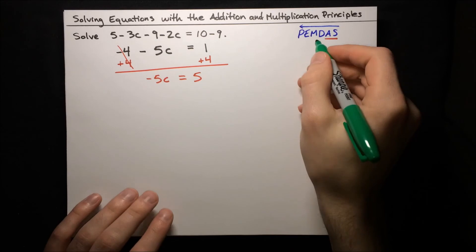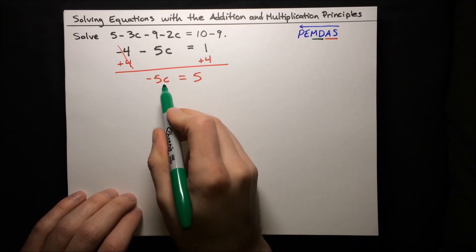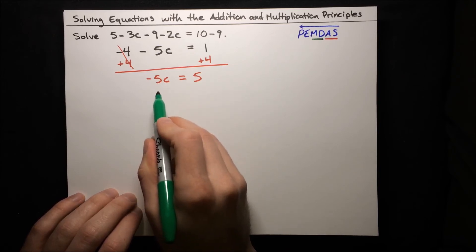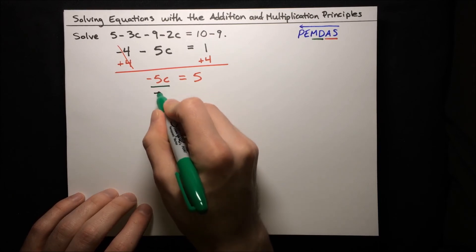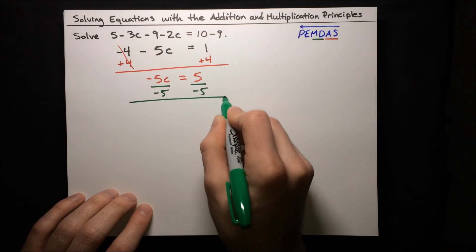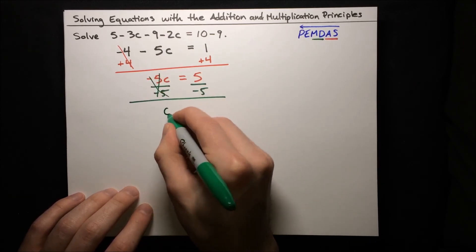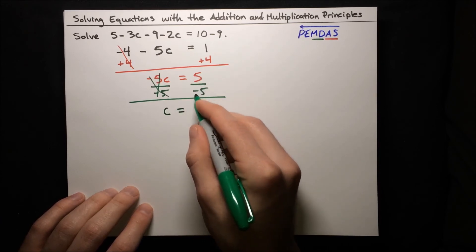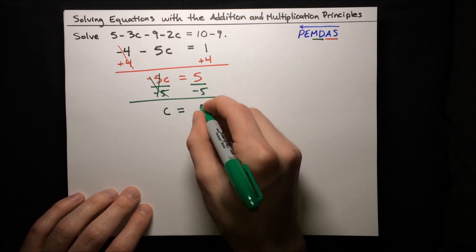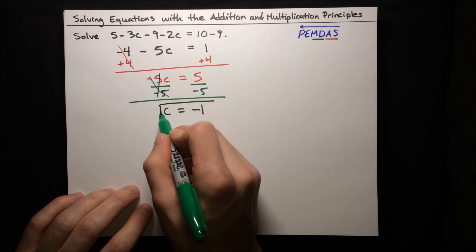Now we can use multiplication and division to get c alone. We've got a constant, negative 5, times c. To cancel it out, we divide both sides by negative 5. The negative 5 cancels, and we just have c on the left-hand side, equal to 5 divided by negative 5. Well, 5 divided by 5 is 1, and we've got a negative sign, so negative 1. c is just negative 1.